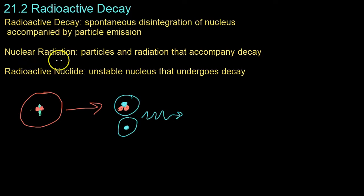And this radiation, nuclear radiation, is defined as particles and electromagnetic rays. So x-rays, gamma rays, light rays, given off by radioactive nuclides. And radioactive nuclides would be simply the unstable nucleus that undergoes decay.